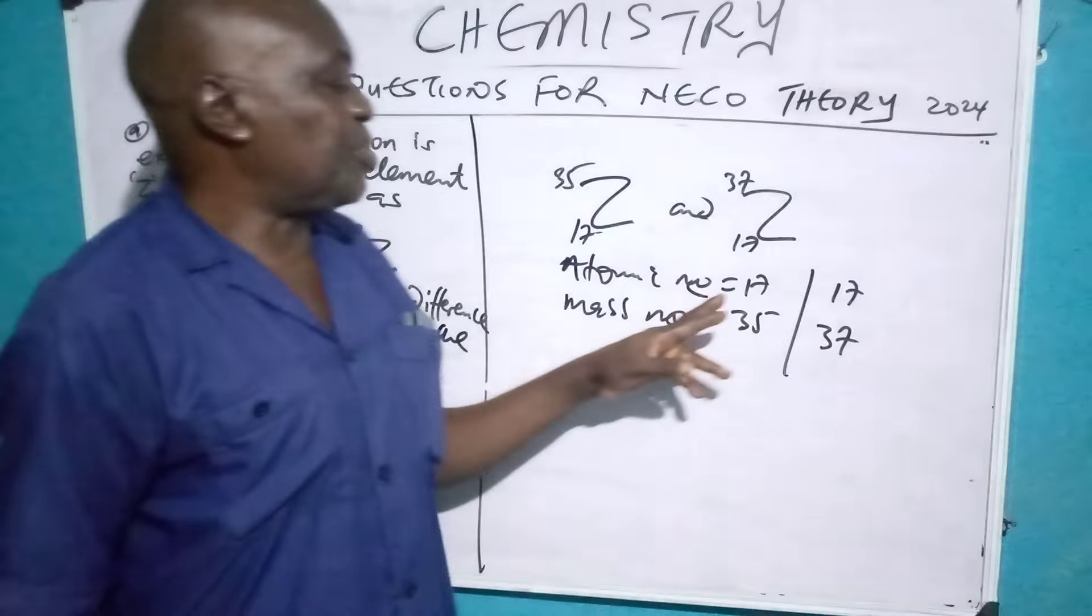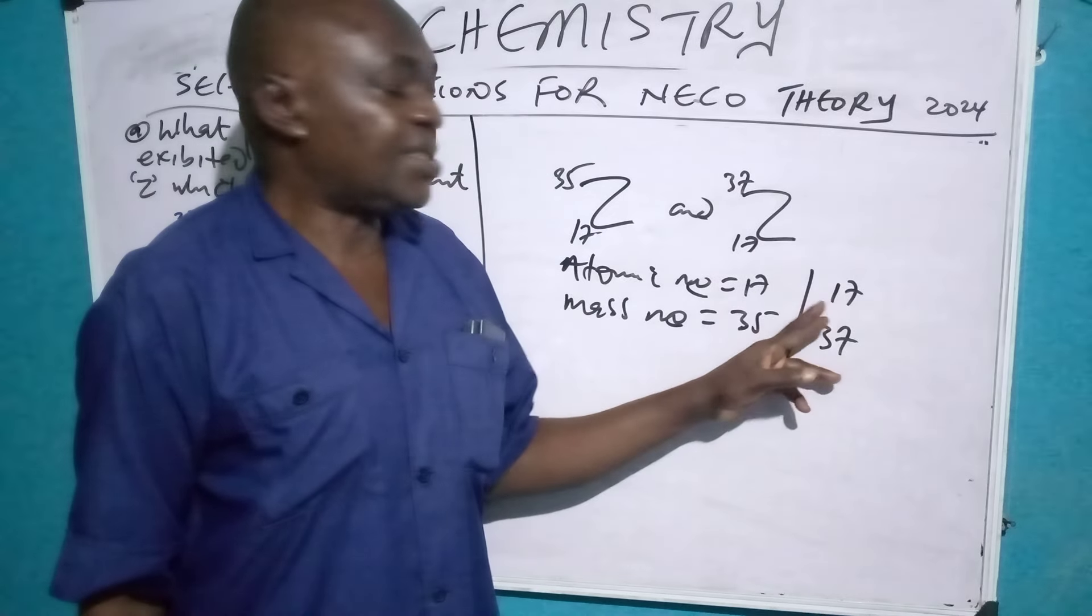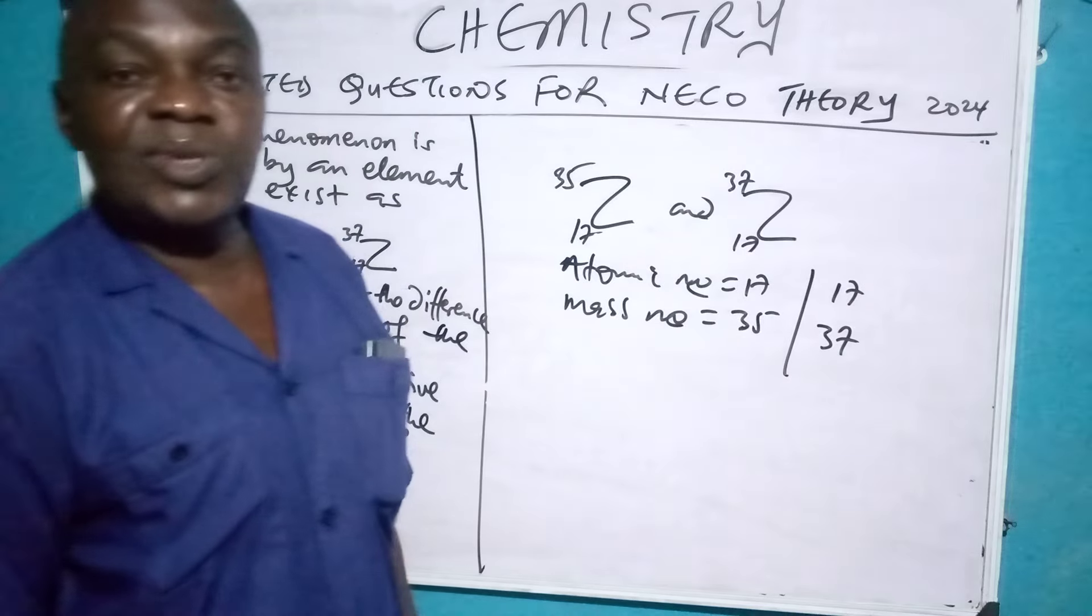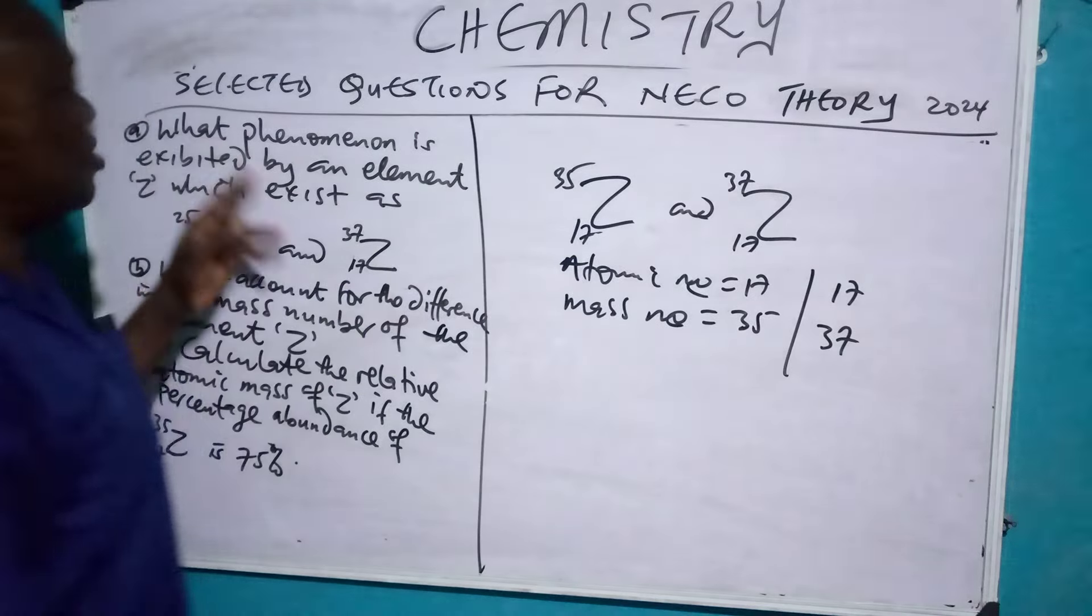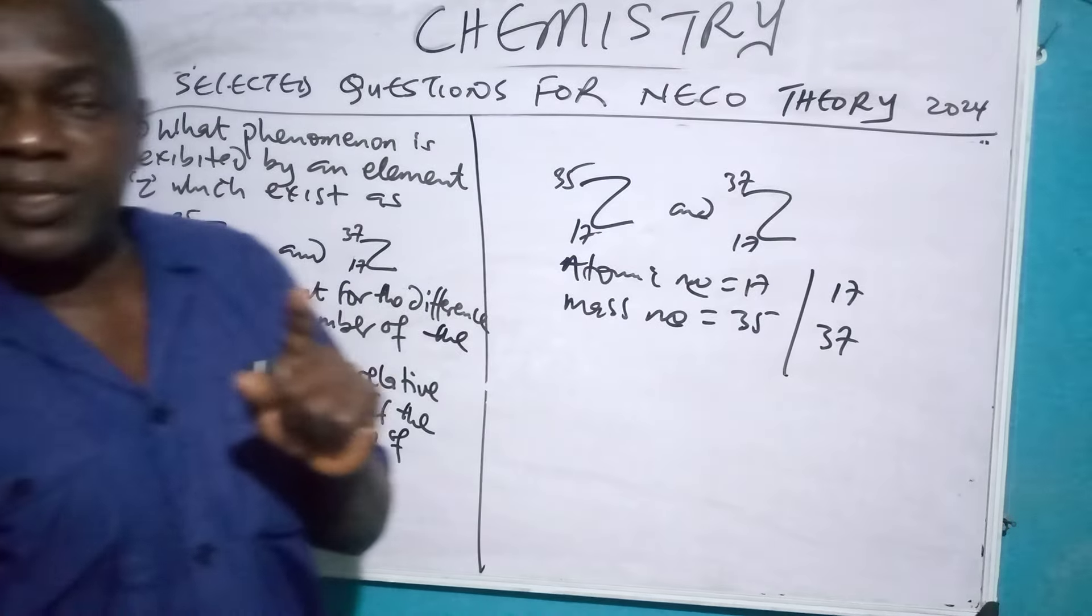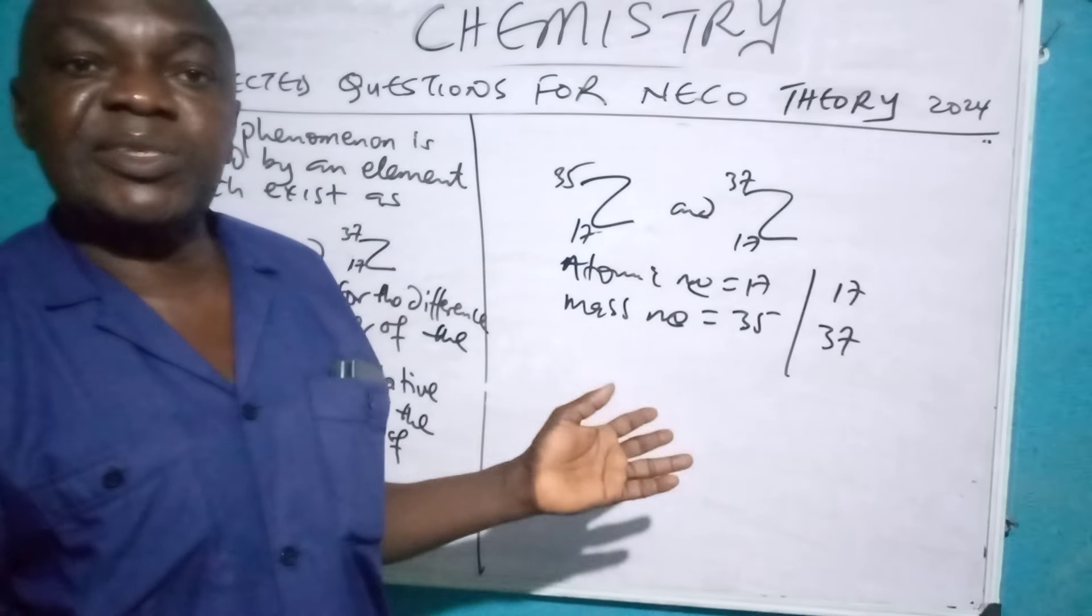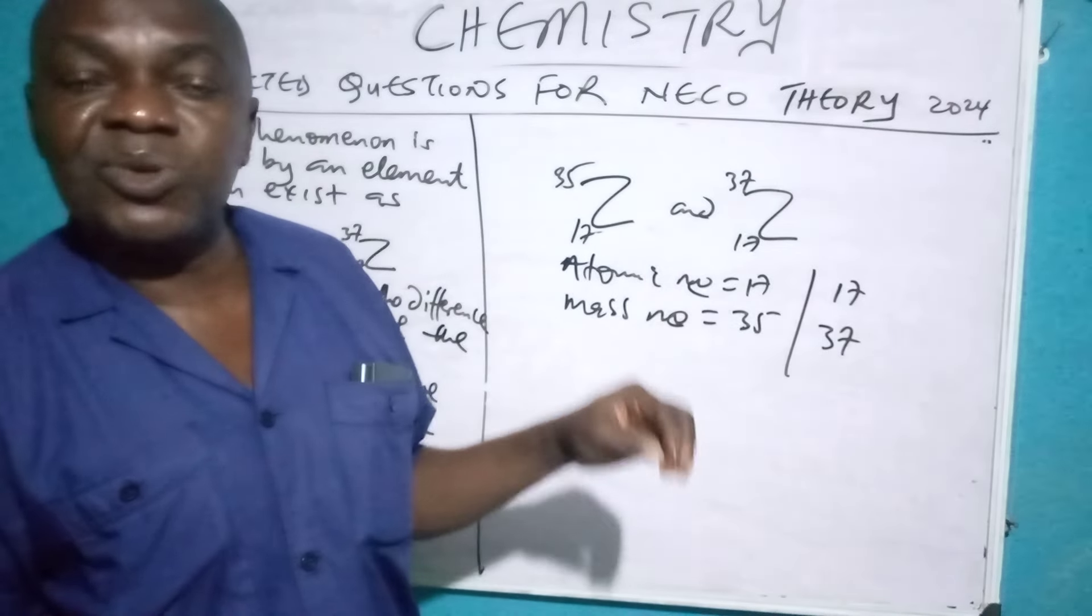So, elements that have the same atomic number, 17, 17, but different mass number, they are called isotopes. The phenomenon is known as isotope. Remember, answer the question properly. If you say, what are those elements called? Isotope. What is the phenomenon? Isotope.